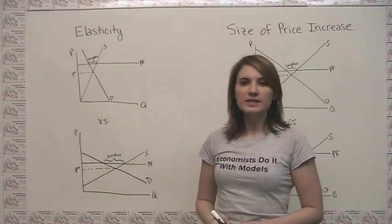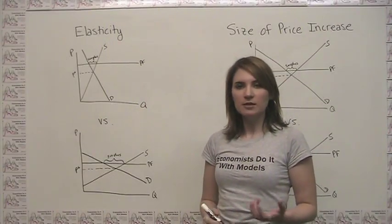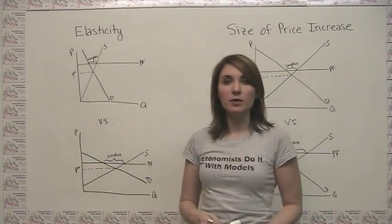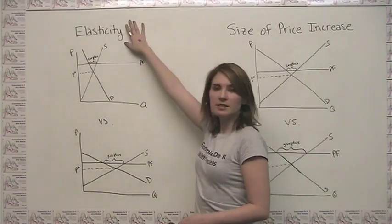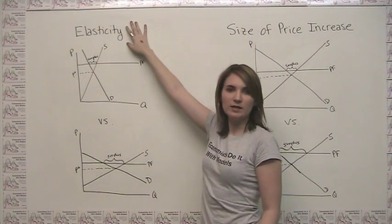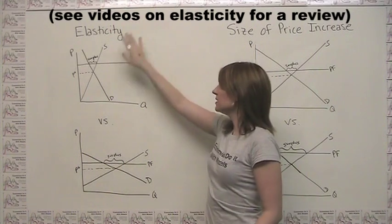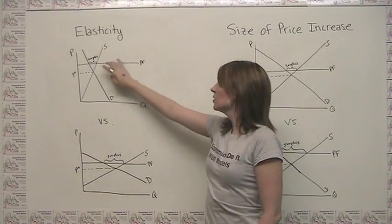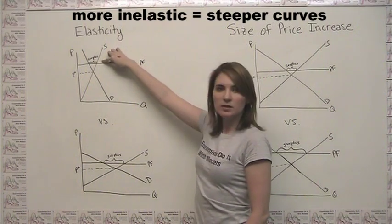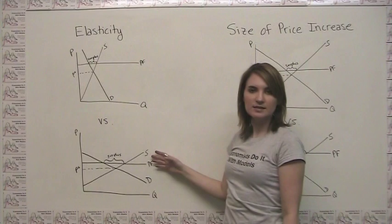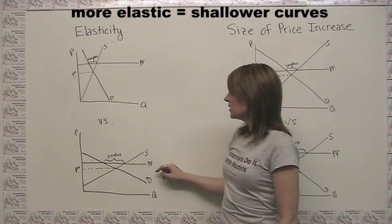Just like with price ceilings, there are two factors that affect the size of the surplus that we get when we're talking about a price floor. The first factor is elasticity, or how steep or shallow the supply and demand curves are. You'll notice here that when we have more inelastic supply and demand, our surplus is smaller than when we have flatter or more elastic supply and demand.